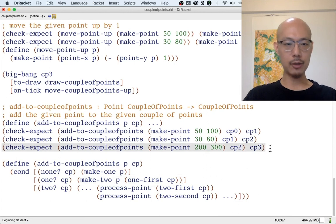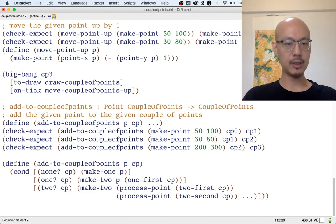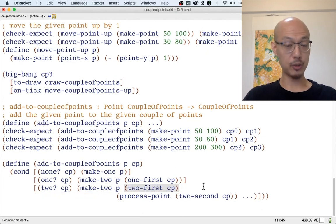Finally, how are we going to fill in the case where the input is already made with make two, like CP2? Well, if we look at CP3, that's made with make two. And that's what we should put in our definition. Make two takes two points. We're going to use P for the first point and the two first of CP for the second point without processing it any further. So that will be 3080 in the example here. And we don't need and we cannot actually squeeze in the two second CP at all. So I'm just going to delete that.